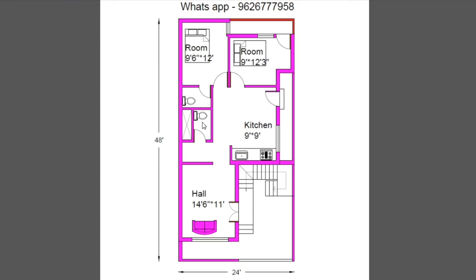Next is the common bathroom. The size is 4 feet by 6 feet. We can place the glass here. Here is the washing area. Here is the bathroom — 4 feet by 6 feet.